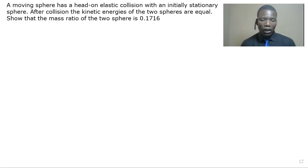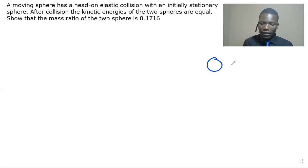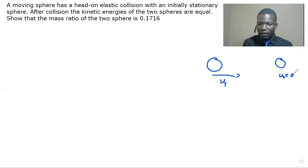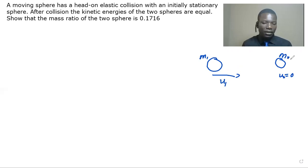So here we have two spheres. One sphere is moving — that's mass 1 — with an initial speed u1, and mass 2 is stationary. So the initial velocity for mass 2 is equal to 0 because it is in a stationary position.